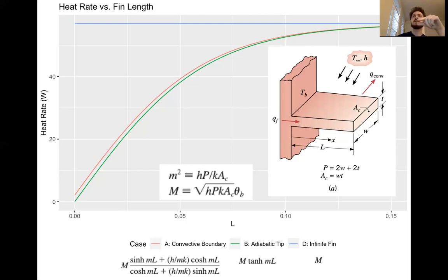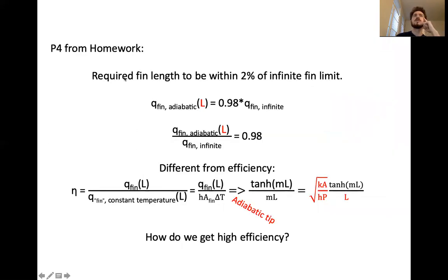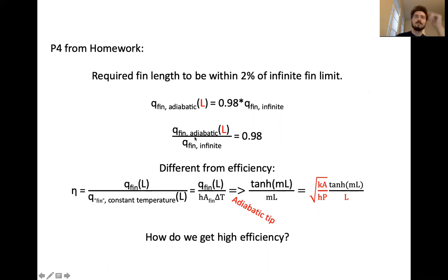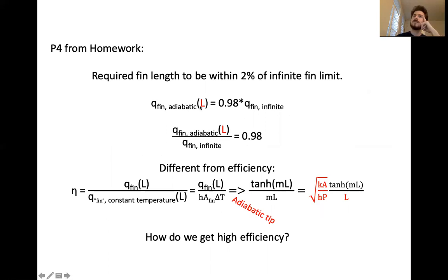Going into more detail on problem four from the homework: the question was, at what length will the adiabatic model be within 2% of the infinite FIN limit? Mathematically, q-fin (adiabatic tip, length L) = 0.98 × q-fin-infinite. Recall q-fin-infinite is just big M. You can rewrite it as a hyperbolic tangent equation, invert that to the other side, and end up with the infinite FIN limit being 2.29 × √(HP/KAc) — or KAc/HP, something like that.